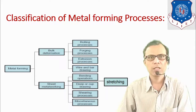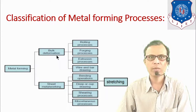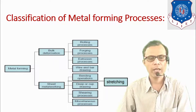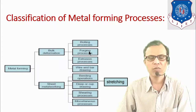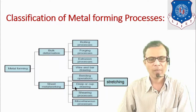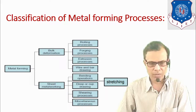Now let us see the classification of metal forming processes. Broadly, it is classified into two categories: bulk deformation processes (BDP) and sheet metal working processes. Subtypes of bulk deformation processes include rolling, forging, extrusion, and wire drawing. Subtypes of sheet metal working processes include stretching, bending, drawing (also known as deep drawing or cup drawing), and shearing processes.